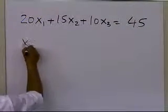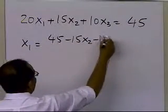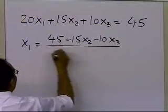So that means that x1 can be calculated by (45 minus 15 x2 minus 10 x3) divided by 20.